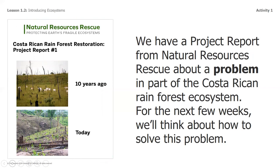This is a project report from Natural Resources Rescue about the problem in a part of Costa Rica. The project area was originally a healthy rainforest. Then, as you can see in the photo on the top, cattle ranchers burned down the rainforest so they could use the land as grazing area for the cows. The bottom photo is the project area today — look at how different those pictures look. Several years ago the cattle ranchers left and took the cows with them. The ranchers were asked to plant trees so the area would become a rainforest again, and some trees called Cecropias and other rainforest plants are slowly starting to grow again, and rainforest animals have begun to come back.